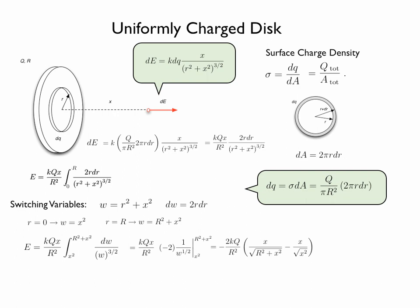We have freedom to choose our direction, so we can always make sure we have chosen our x-axis so that x is not negative. In that case, the second term in the parenthesis simplifies: x over the square root of x squared reduces to 1.